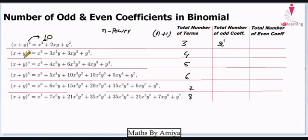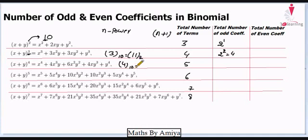Same with 3. The number 3 in base 10 is equivalent to 11 in base 2. There are two 1's, so we can say 2 raised to power 2, that means 4 coefficients would be odd. Same with 4 — the binary notation of 4 is 100. There is only one 1 here, so 2 raised to power 1, that means 2 would be the odd coefficients.